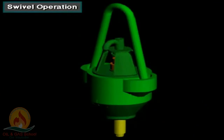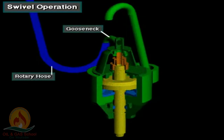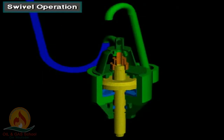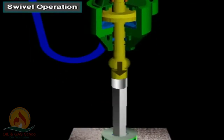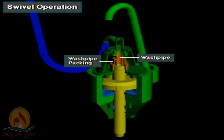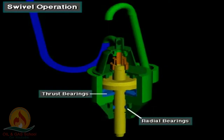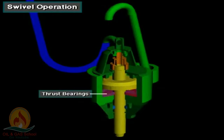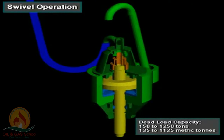Here is an isolated view of the swivel. The bale hangs the swivel from the hook. The rotary hose conducts drilling mud to the gooseneck. Mud flows through the gooseneck, down the wash pipe, and into the stem and drill string below. Wash pipe packing seals the high-pressure mud in the wash pipe as the stem rotates. The stem rotates on heavy-duty radial bearings and thrust bearings. The main thrust bearings support the entire weight of the drill string as it rotates. Swivels have dead load capacities ranging from 150 to 1,250 tons, about 135 to 1,125 metric tons.